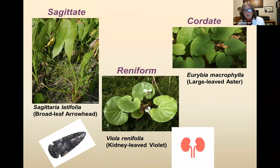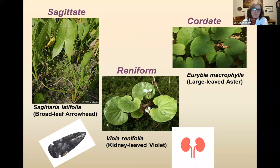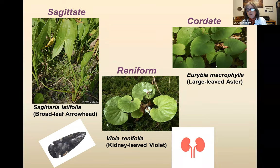Another leaf shape is reniform — kidney-shaped. Viola renifolia means kidney-shaped violet. Another common leaf shape is cordate, which means heart-shaped: basically a big heart-shaped leaf. So: sagittate, reniform, cordate.